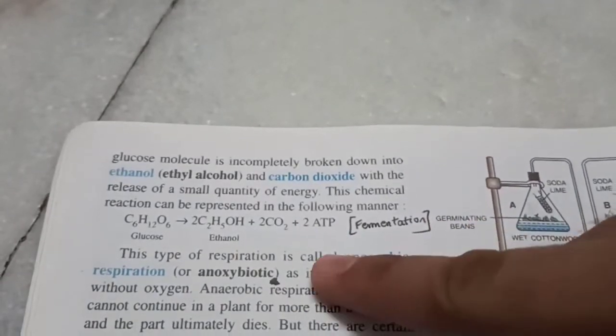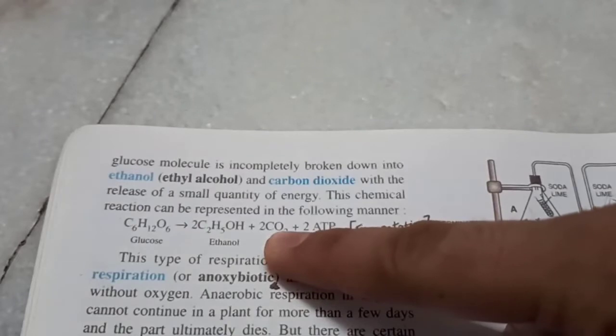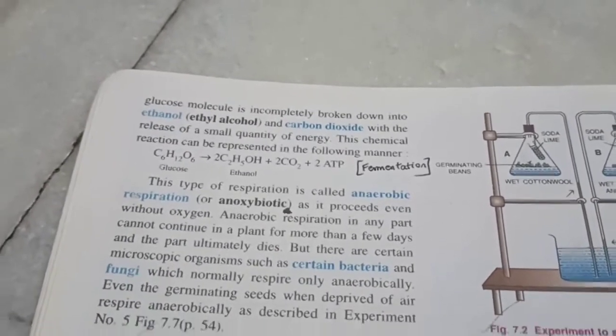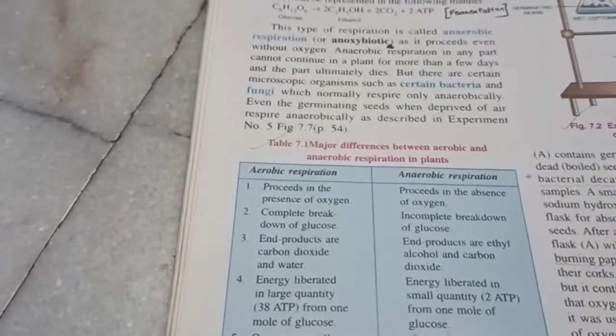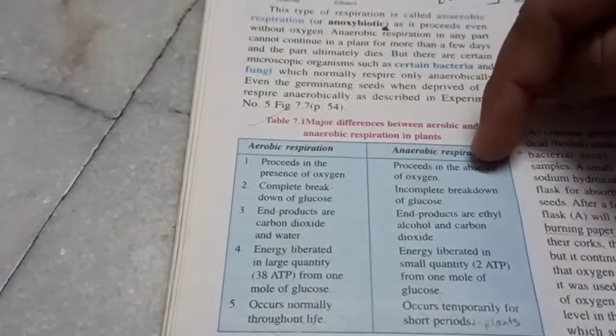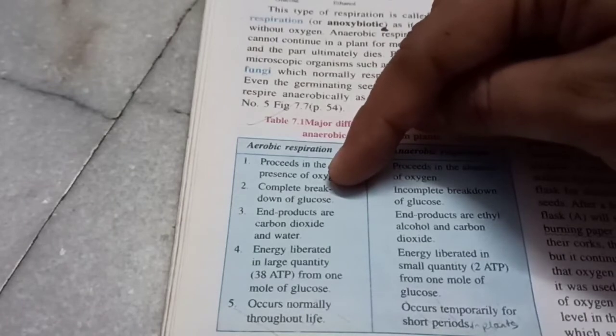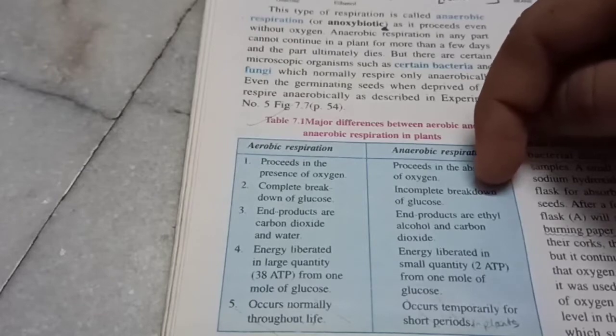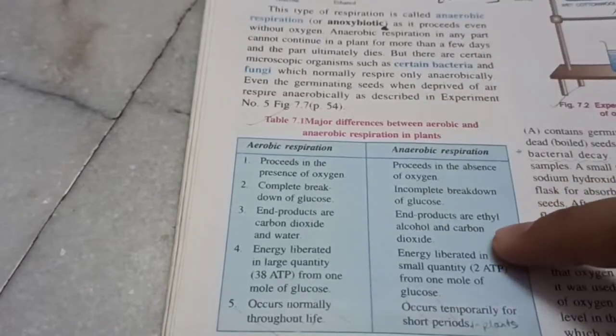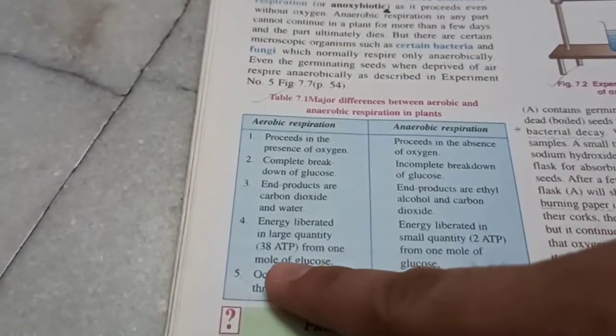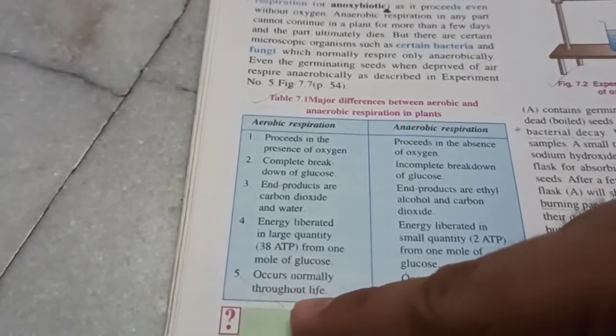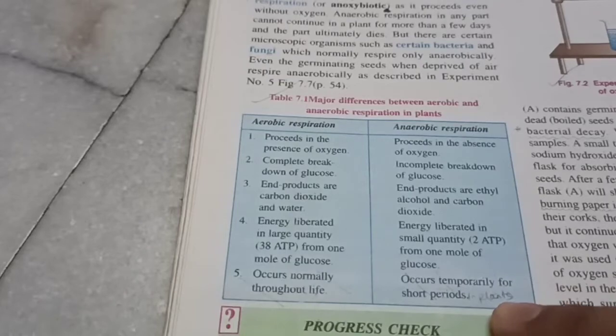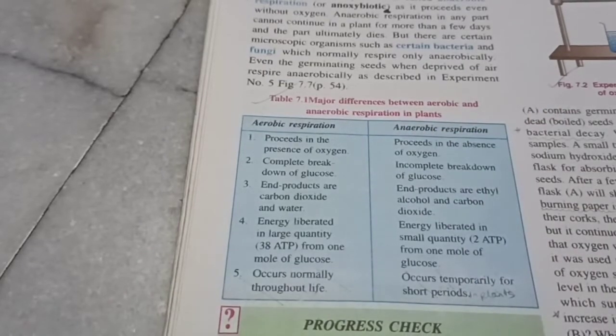In animals, this reaction doesn't take place. Their CO2 is not produced. In fact, lactic acid is produced. But that you'll study in the animal respiration chapter. So, once again, if you want to differentiate between aerobic and anaerobic, this proceeds in the presence of oxygen, absence of oxygen, complete breakdown of glucose, ultimately CO2 is left. Here, it's incomplete because ethanol is left, and ethanol could be further broken down through other processes. And the products are different. Notice CO2 is produced here as well. The energy liberated is far more compared to anaerobic respiration and occurs normally throughout life, but occurs temporarily for short periods in plants, mention that. Because in fungi and bacteria, it's normal. Anaerobic respiration is normal for them. They don't need oxygen to survive. Many of them.